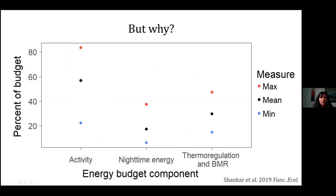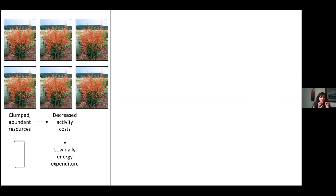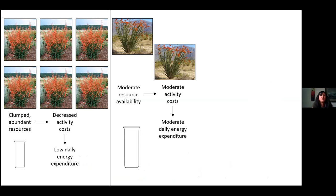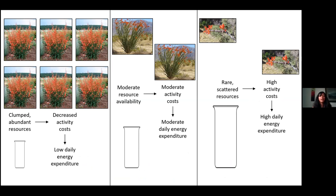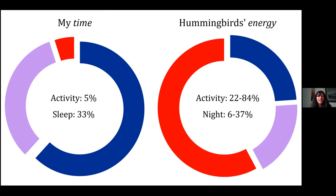Activity costs are the highest and most variable of the three categories — activity, nighttime energy, and thermoregulation/BMR — in their contribution to the overall energy budget. It turns out that resources, especially pre-monsoon, were really clumped and abundant. As the early monsoon set in, resources took a dip — there were fewer resources and they were scattered. So hummingbirds had to spend more and more energy hovering and flying to find those resources, increasing their overall daily energy expenditure. Whereas I spend about 5% of my day active, they can spend three to thirteen hours of their day flying around and hovering.